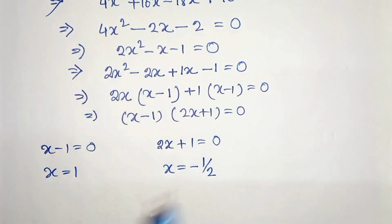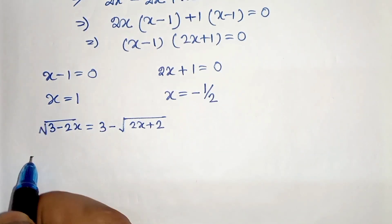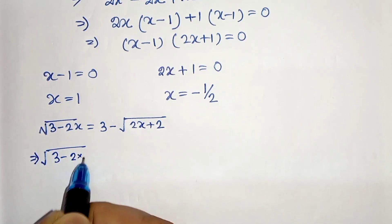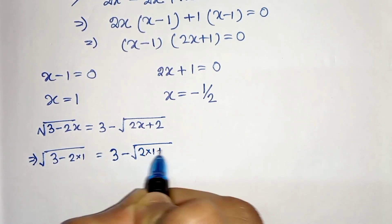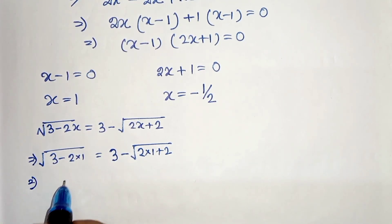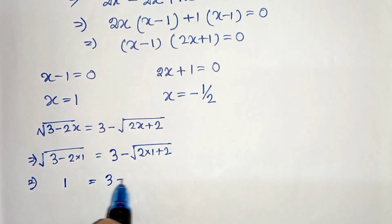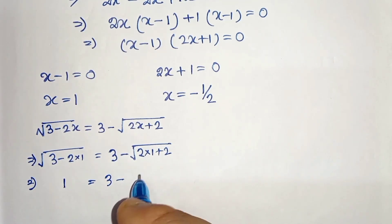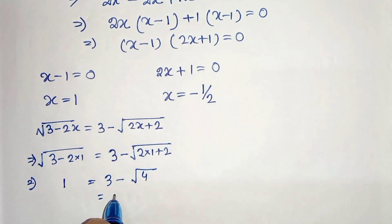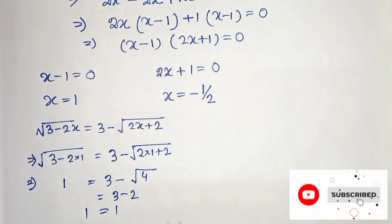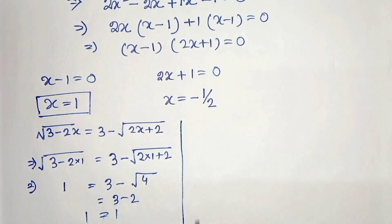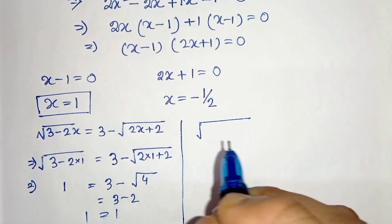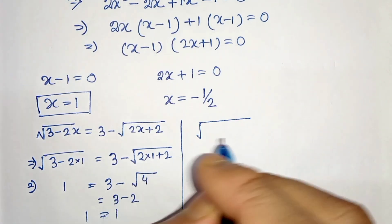We have two values: x = 1 and x = -1/2. Now let's check whether they are valid by substituting into the original equation. For x = 1: LHS = √(3 - 2×1) = √1 = 1. RHS = 3 - √(2×1 + 2) = 3 - √4 = 3 - 2 = 1. Both sides equal 1, so x = 1 satisfies the equation.